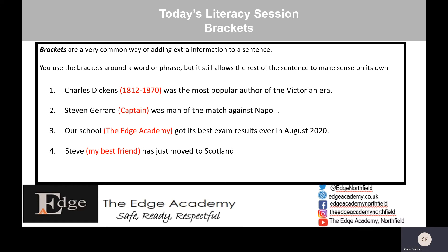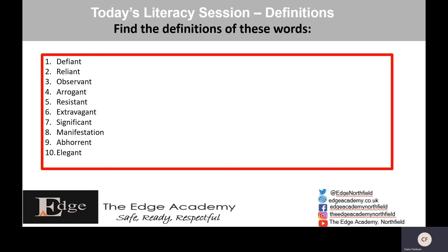We're now moving on to definitions. I want you to find the definitions of these words. Number one: defiant. Number two: reliant. Number three: observant. Number four: arrogant. Number five: resistant. Number six: extravagant. Number seven: significant. Number eight: manifestation. Number nine: abhorrent. And number ten: elegant.